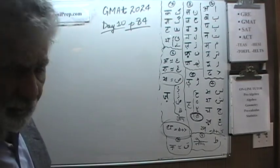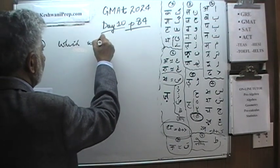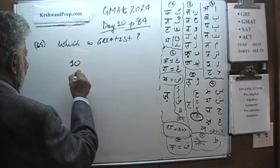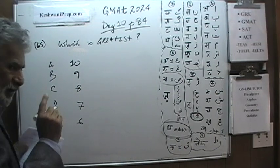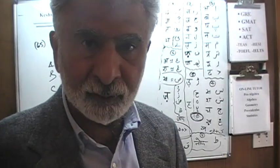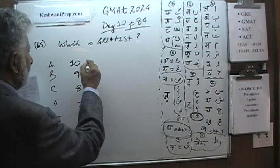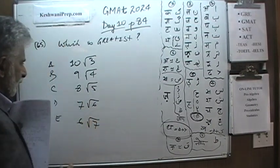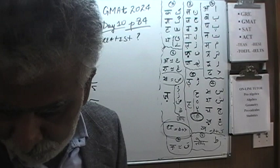On page 84, the very first problem is number 65. Number 65 is asking us: which is greatest? They give us 5 quantities — our job is to locate the greatest one. The options are: 10√3, 9√4, 8√5, 7√6, and 6√7 — answer choices A, B, C, D, E. Pause the video, do the problem yourself first, then compare your work against what we will do together.